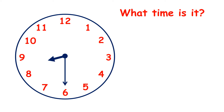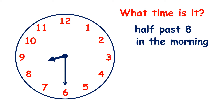What time does the clock show now? The hour hand is between 8 and 9 and the minute hand is pointing to 6, so it shows half past 8. It could be half past 8 in the morning, so we would say it's 8:30 a.m. Why would we say a.m.? Because if it's in the morning, that means it's before midday, and we say a.m. for times that are before midday.